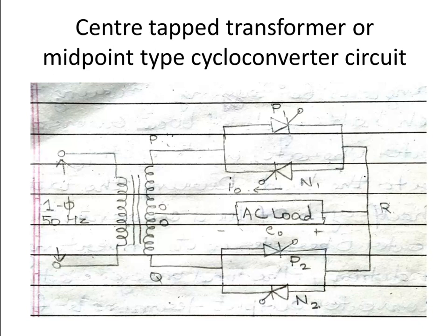During the fourth half cycle (second negative half cycle), N1 is forward biased and if triggered, current flows O → load → R → N1 → P, which is the negative direction. During the fifth half cycle, N1 is naturally commutated and N2 is forward biased, so current flows O → load → R → N2 → Q, also the negative direction through the load.